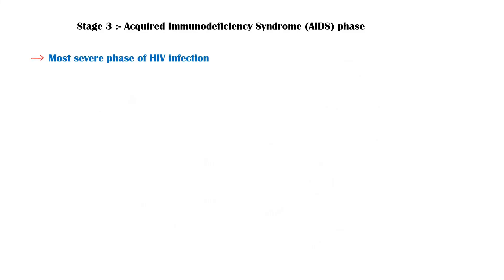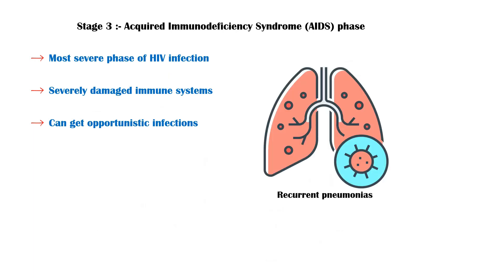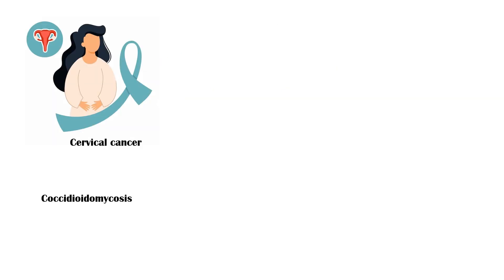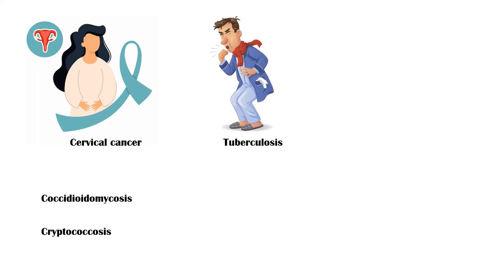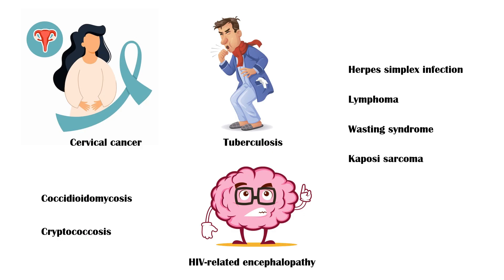Stage 3 is called Acquired Immunodeficiency Syndrome, or AIDS, and it is the most severe phase of HIV infection. People with AIDS have severely damaged immune systems and can get an increasing number of severe illnesses called opportunistic infections. Some of these conditions include recurrent pneumonias, candidiasis of the bronchi, trachea or lungs, esophageal candidiasis, cervical carcinoma, coccidioidomycosis, cryptococcosis, tuberculosis, HIV-related encephalopathy, herpes simplex infection, lymphoma, wasting syndrome, and Kaposi sarcoma.